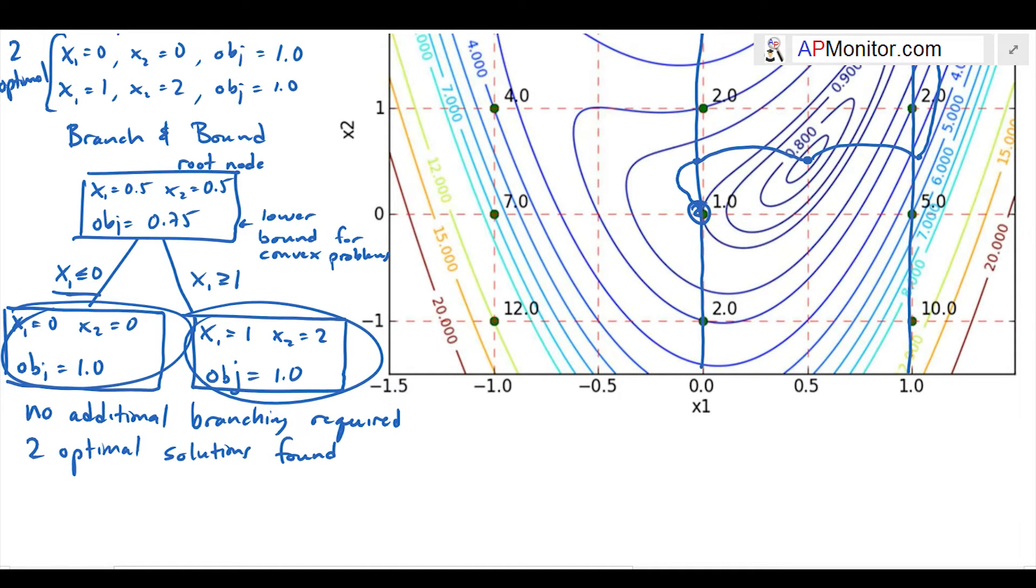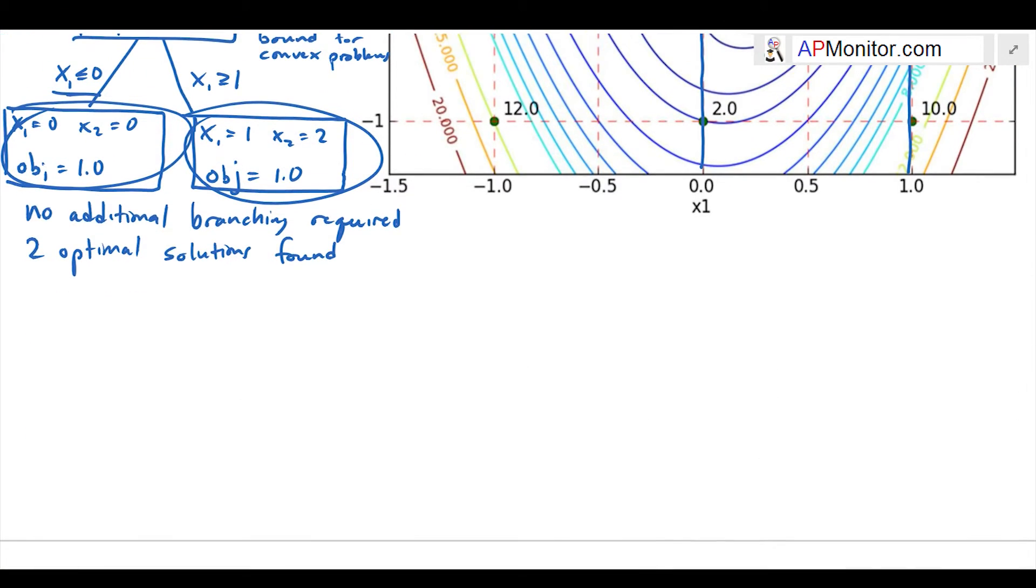Two optimal solutions were found. Now we're going to branch on x2 instead. Let's just say we started with x2. I'm going to draw this as a horizontal tree instead of a vertical tree.